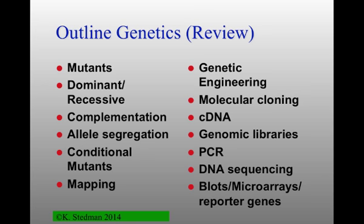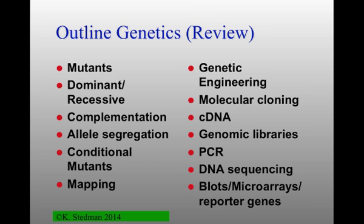Today looks like a ridiculously long list of topics in genetics, but hopefully this is either review from what you've already learned in principles of biology, or what you are learning or will learn in genetics. We'll start talking about various mutants — the difference between mutant and wild type — which is really the basis of genetics. We'll cover dominant/recessive, complementation, allele segregation, conditional mutants, and mapping — all classical genetics on the left-hand side of the slide.